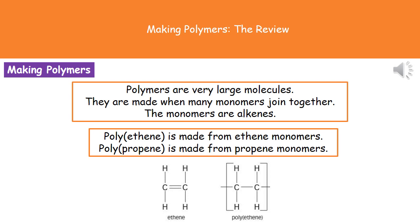If, however, we started with the displayed formula of the polymer on the right hand side, to draw the monomer, what we do is take away the brackets, take away the bonds extending out of the brackets from the carbons, and put a double bond between them.